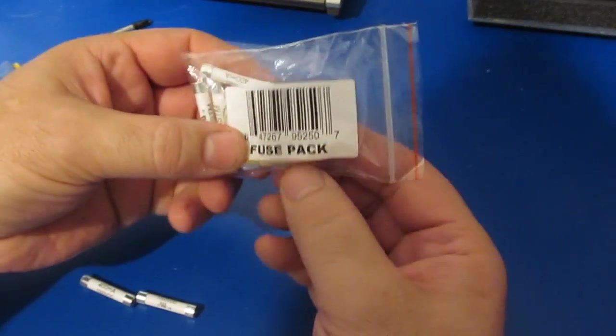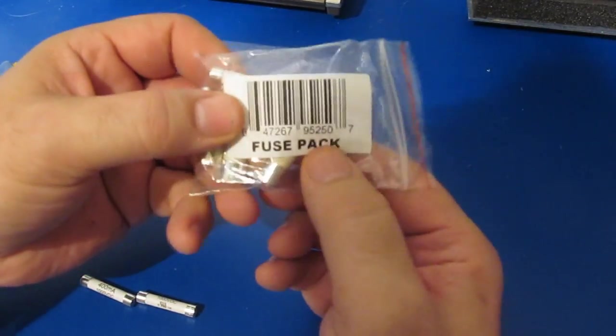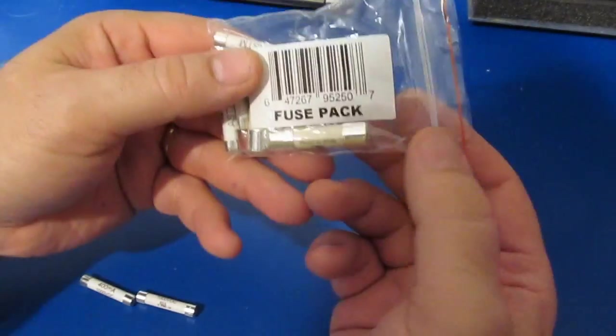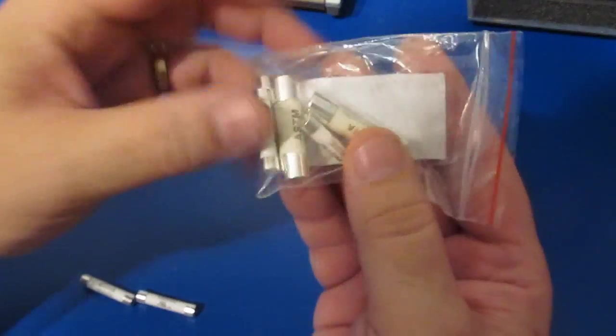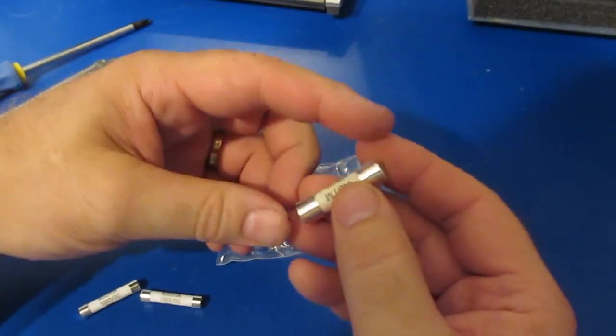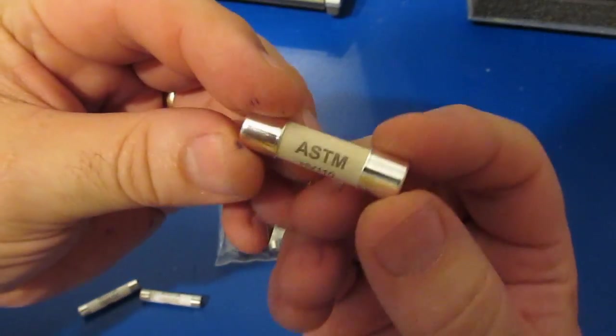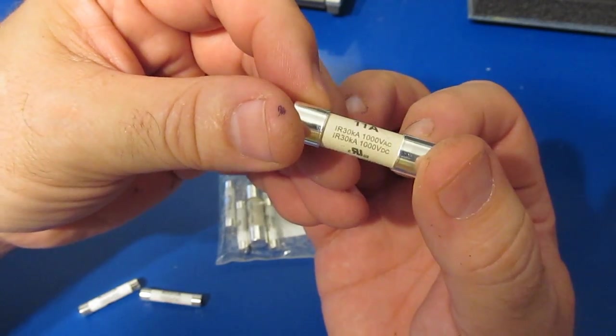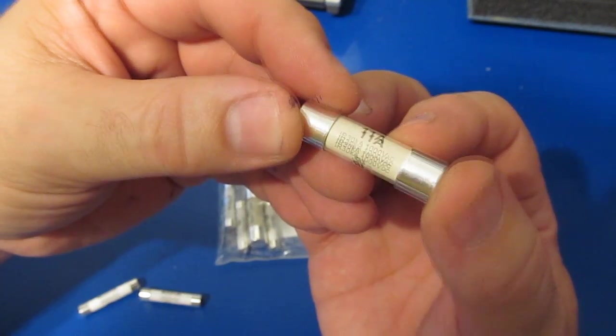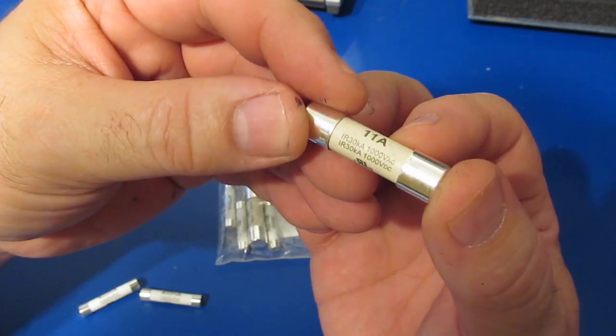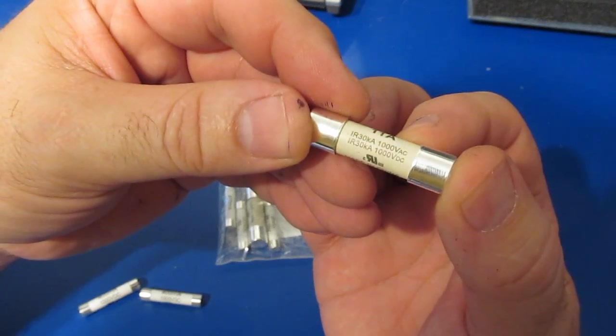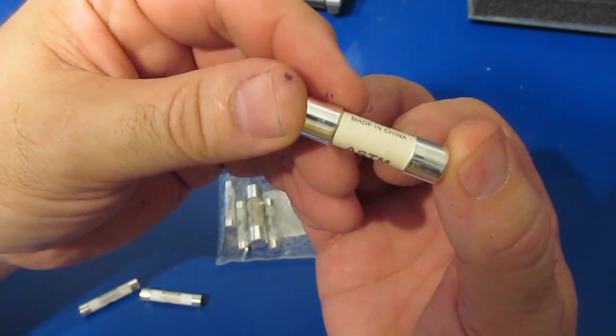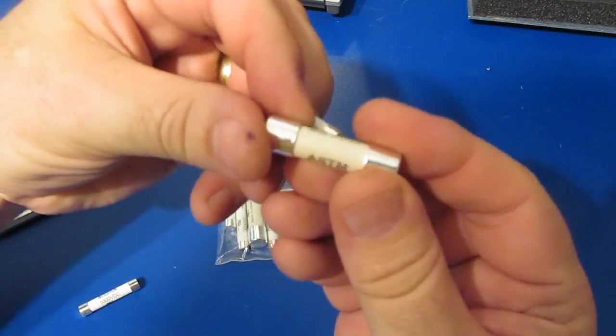Hello again, today I'm going to be looking at a small fuse accessory pack that Dave Jones at EEV blog is selling. You can see the package comes with an assortment of fuses, these are all produced by ASTM. This is an HV110 11 amp, you can see it has a brake current of 30 kiloamps at a thousand volts AC and DC, has the RU mark on it, of course made in China, and there's two of these fuses included in the kit.